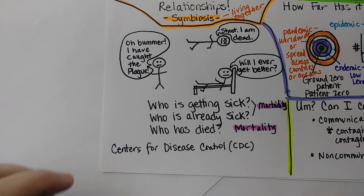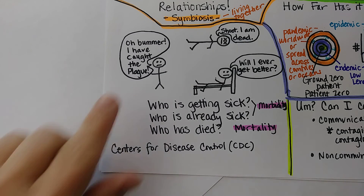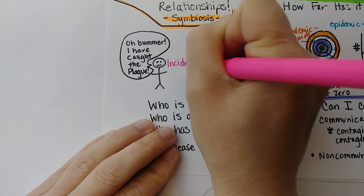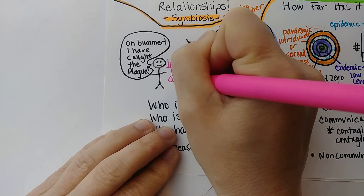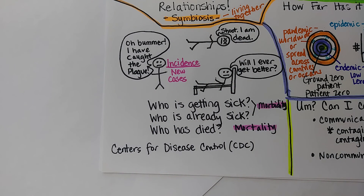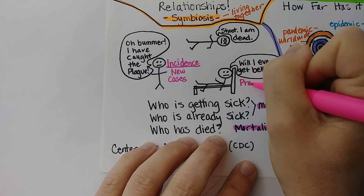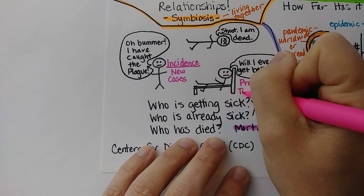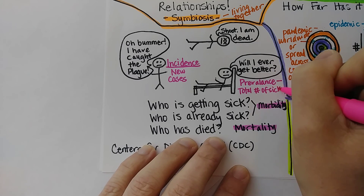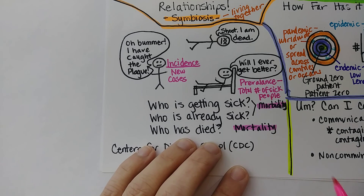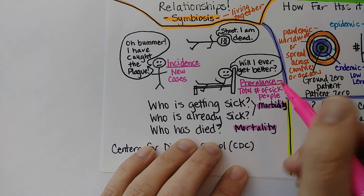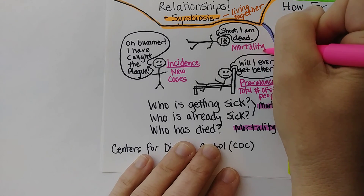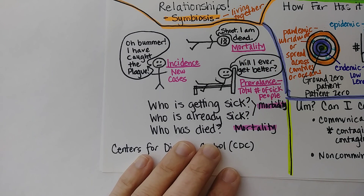There are also some terms for tracking disease spread. Incidence is the number of new cases — so if someone just caught the plague, they would be reported as a new incident. Prevalence is how many people actually have the illness at any given time — all the new people who got sick that week plus the number of people still sick, meaning the total number of sick people from that disease. Prevalence will virtually always be greater than incidence. The CDC also tracks how many people died from a disease in a given week as mortality.